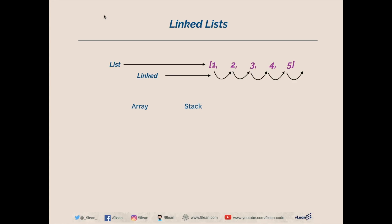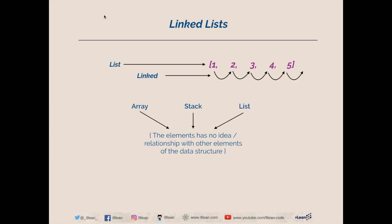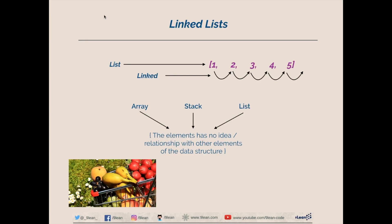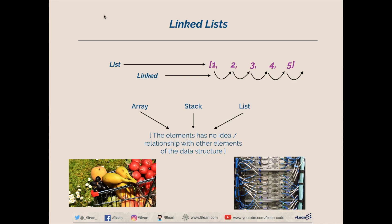How is it different from other data structures like array, stack, or list? In all these cases, the data structures don't know about other elements of the collection. The difference is the awareness about other elements, especially the next element. For example, a shopping cart has no relationship or awareness about other items in it, but routers are aware about the next router they are connected to — so routers can be considered a linked list.